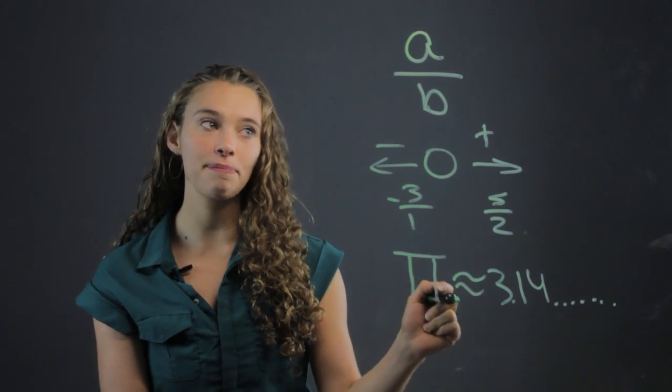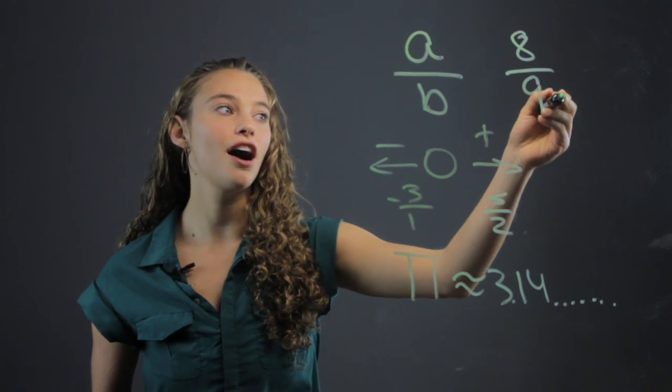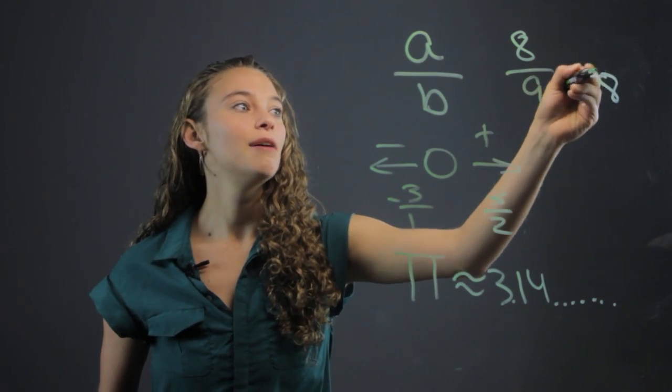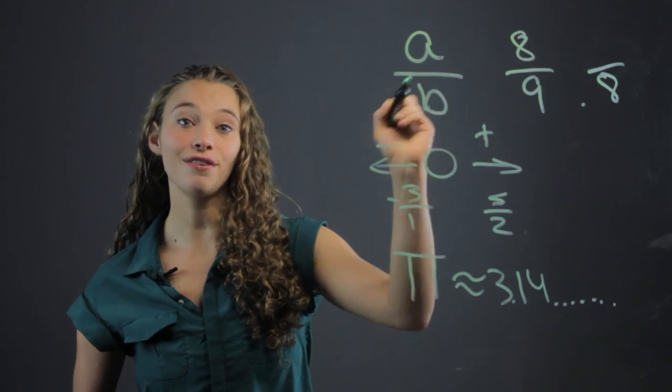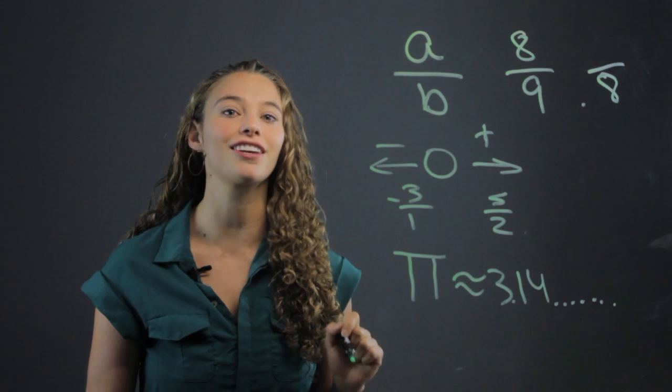Even if a number repeats, such as eight ninths, when you divide it, that's going to go on and on, point eight repeating. But you can write it as a fraction, and so it's rational. Pi we cannot write as a fraction, so it's an irrational number.